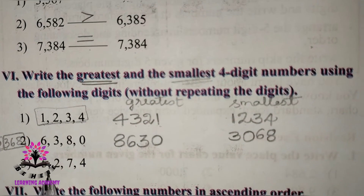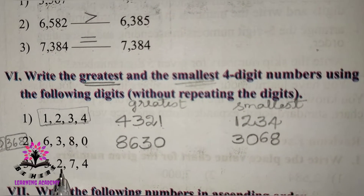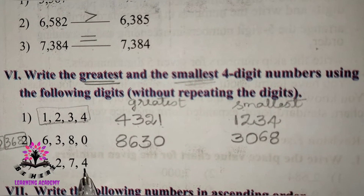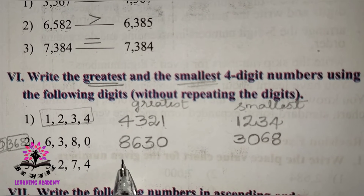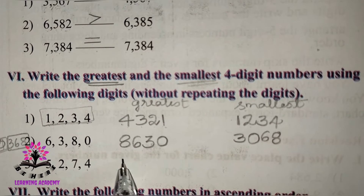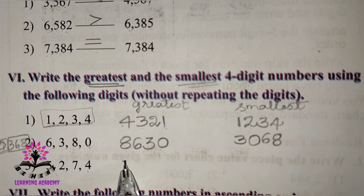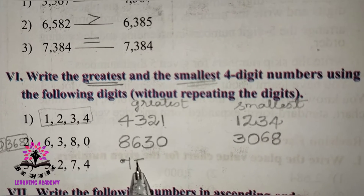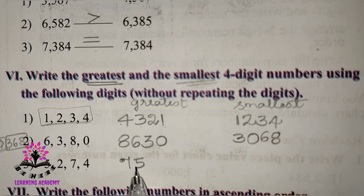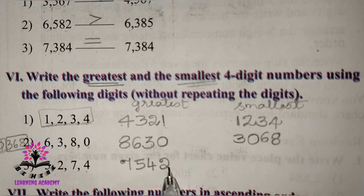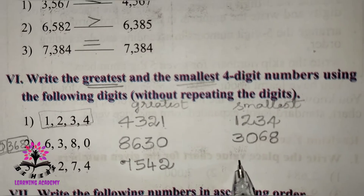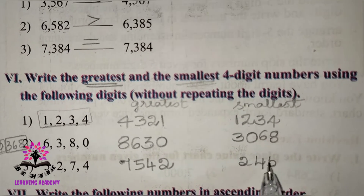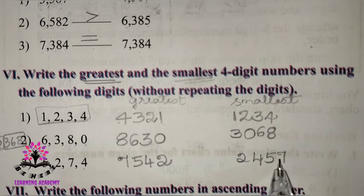Last set: digits 5, 2, 7, 4. The greatest number formed is 7542. The smallest is 2457.